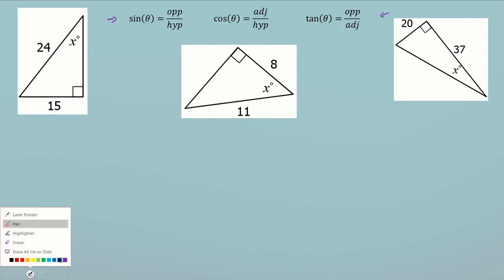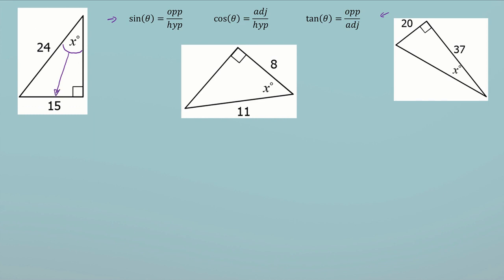We approach this problem like any regular problem. The angle of reference we're trying to find is x. The side that's opposite my angle of reference is my opposite side. I should always be able to identify the hypotenuse, and the angle right next to the angle of reference that's not the hypotenuse is my adjacent side.